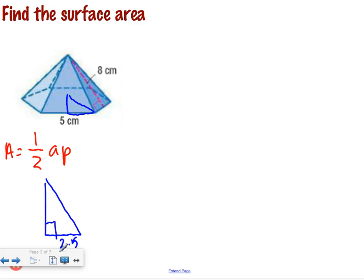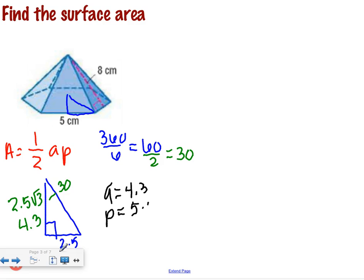Do you guys agree 2.5 down here? How do you find your angle? 360 divided by 6, which gives me 60. Then I divide that by 2, so 30. For our short side, it's 2.5. What's our long side? 2.5 root 3. Let's approximate that. Anyone know what that is? Or can you tell me? 4.3. So we found our apothem to be 4.3. What would our perimeter be? 5 times 6, 30.